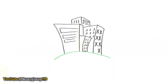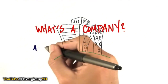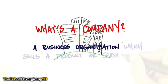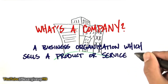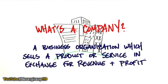Let's take a start at business models and customer development. Before we even begin, one of the first questions I tend to ask is: what is a company? What is it that I'm trying to actually start? Just for the sake of this class, I think we ought to use this definition: a company is a business organization which sells a product or service in exchange for revenue and profit.